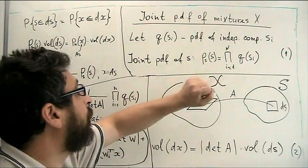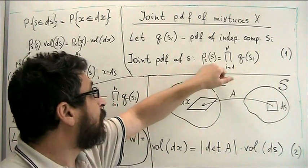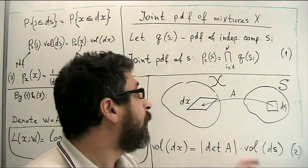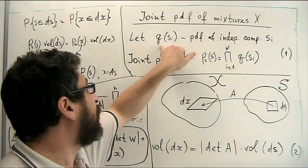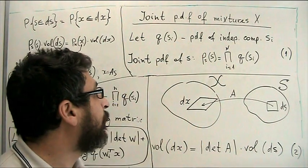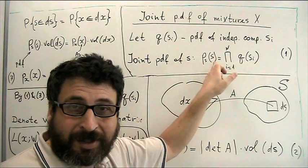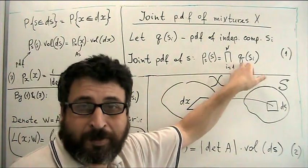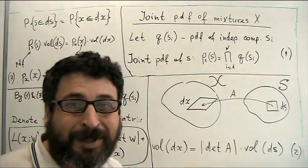Let's consider a joint probability of source vector S. Suppose that entries of S are statistically independent and even they have the same probability density function q of S_i. Then, joint probability of vector x is just a product of those scalar probability density functions because of independence.